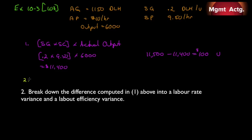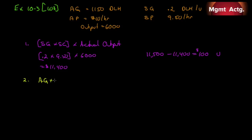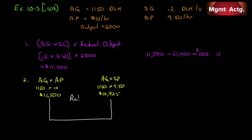Number two asks us to break down the difference into a labor rate variance and a labor efficiency variance. Actual quantity times actual price: 1,150 times ten dollars gives us eleven thousand five hundred. Actual quantity times standard price: 1,150 times nine fifty gives us ten thousand nine hundred and twenty-five. The rate variance — note it's called a rate variance, not a price variance, which is for materials — is eleven five hundred minus ten nine twenty-five, equaling five hundred and seventy-five dollars unfavorable.